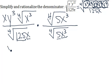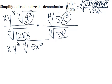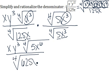After we do that, we have xy cubed times the fourth root of 5x to the sixth, because we have an x cubed here and an x cubed here, all over the fourth root of 625x to the fourth.